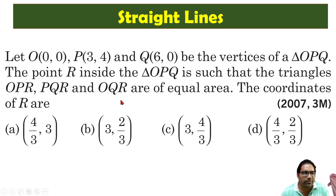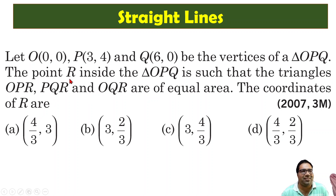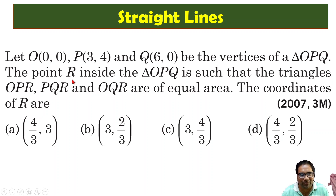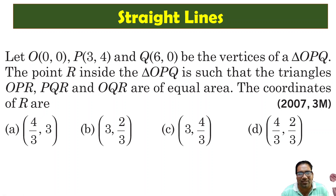What does that mean? Point R should be the centroid, because the centroid divides a triangle into three equal areas. Centroid is the center of mass — so all three areas being equal is exactly why the centroid is the center of mass. If you put a pin at the centroid, the triangle will balance itself.